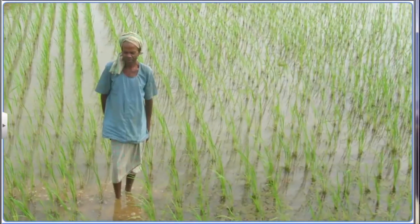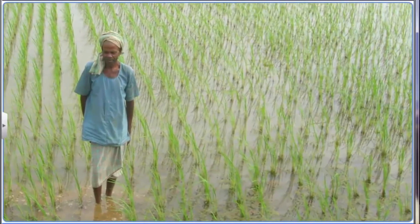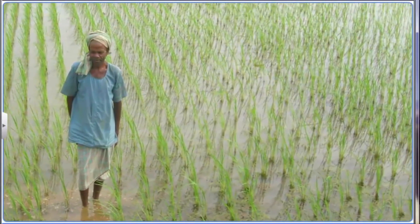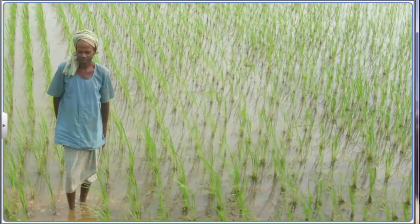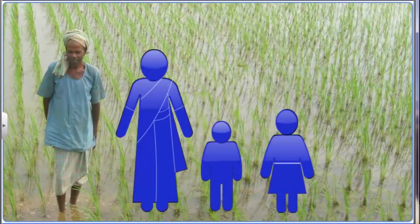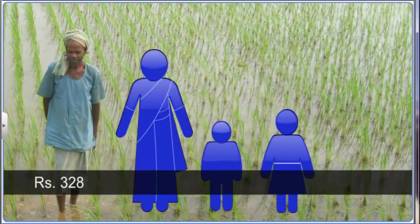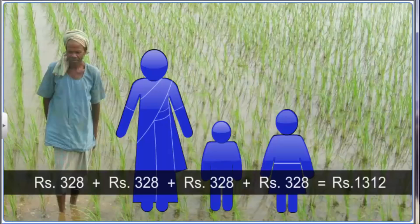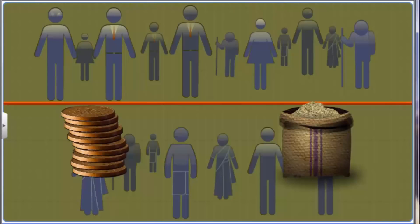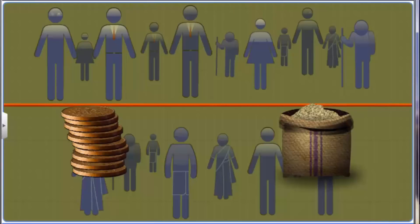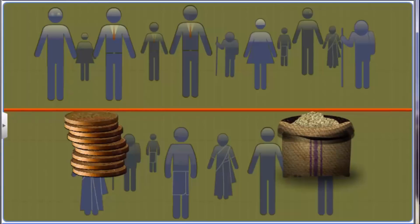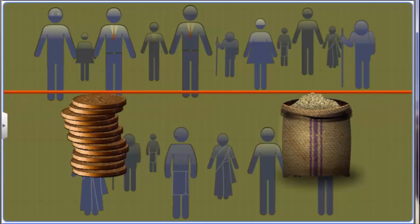The poverty line income is fixed on a per person basis. Thus, to find the poverty line for a family, this monthly income is multiplied by the number of members in the family. The poverty line is revised periodically to accommodate rising prices and the changing requirements of people. This work is done through nationwide surveys conducted by the National Sample Survey Organization.